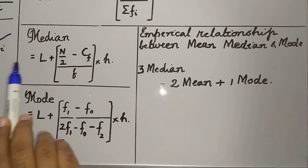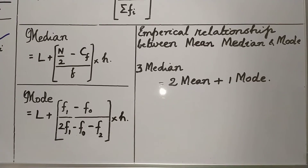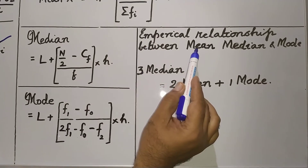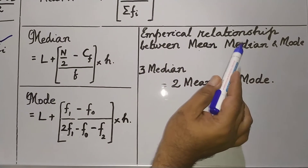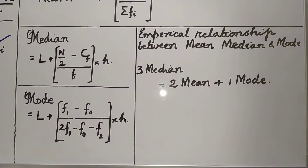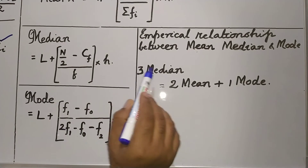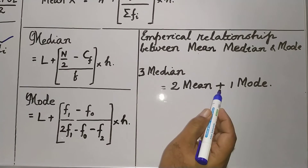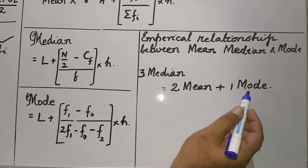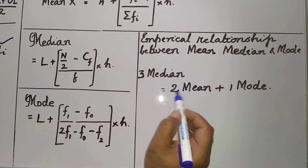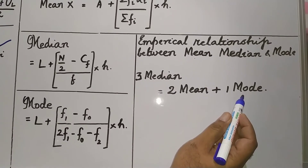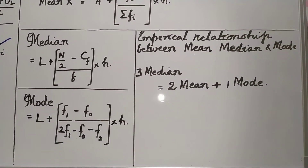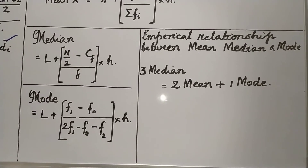What is the empirical relationship between the three terms — mean, median, and mode? Three times the median is equal to two times the mean plus one time the mode. That is: 3 median = 2 mean + 1 mode.